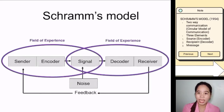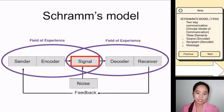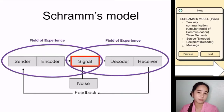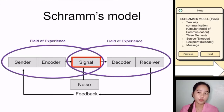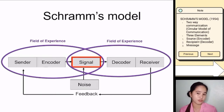The overlapping field of experience is where the signal exists. For the signal to reach the receiver successfully, it needs to be within a shared field of experience. The field of experience can be impacted by a number of things — culturally, if the sender and receiver are from different cultures, examples may not be understood. It can also be separated by socioeconomic status, geographic region, and a number of other factors.